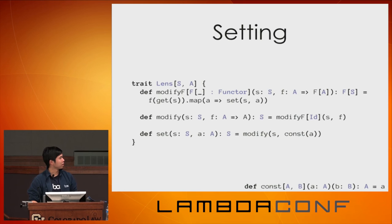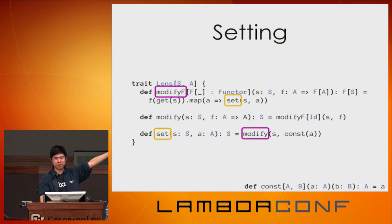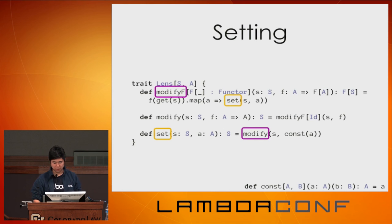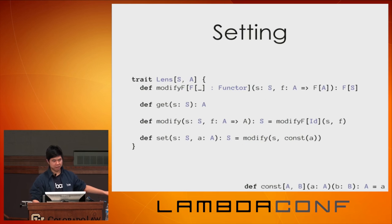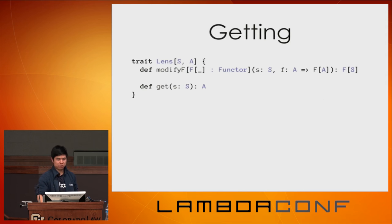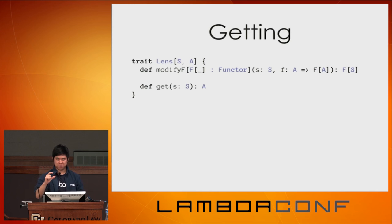We have modify and set defined in terms of modifyF — but modifyF is implemented in terms of set, creating an infinite loop. So we make modifyF abstract, and along the way make get abstract too. Now to define a lens we implement modifyF and get. But it seems weird to have both — maybe we can define one in terms of the other. Can we define get in terms of modifyF? At first it seems strange — modify is modifying something, whereas get is extracting a value. But if we look at the types: modifyF gives us F[S] back, and we want an A value.